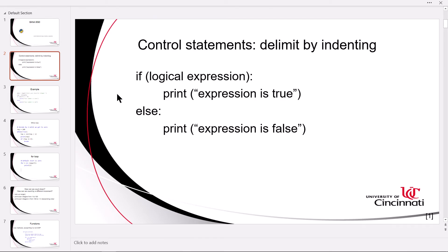A control statement can be described as a way to branch in a program and make a decision based on the state of some variables, and then execute code whether that condition or expression is true or false. We build logical expressions using logical operators and relational operators, and then we make a decision by putting that expression in parentheses.